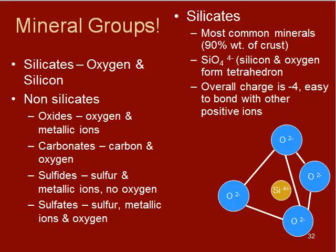The major mineral groups we have are silicates and non-silicates. Non-silicates are broken up into oxides, carbonates, sulfides, and sulfates. Silicates are a much bigger group. They are composed of silicon and oxygen, and all of these silicates have the same makeup: four oxygen ions and one silicon ion. These are the most common of all the minerals on the planet, making up about 90% of the weight of the crust. Silicon and oxygen form what's called a silicon-oxygen tetrahedron, a pyramid-like shape, and all silicate minerals have one silicon and four oxygen bonded in various ways.